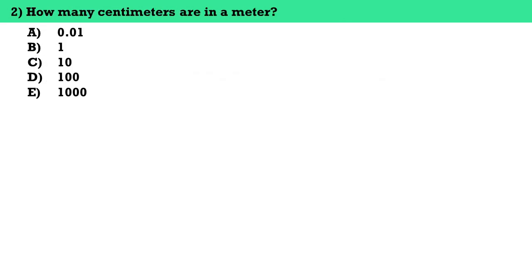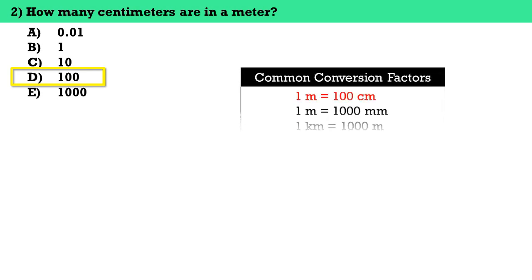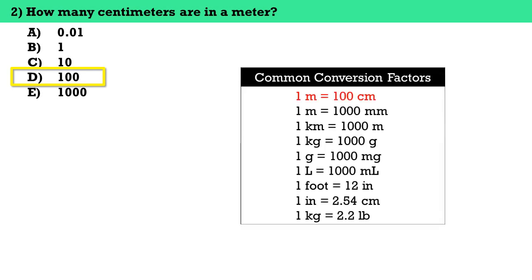Number two, how many centimeters are in a meter? The answer here is letter D, 100. According to this table of the most commonly used conversion factors, one meter is equal to 100 centimeters.